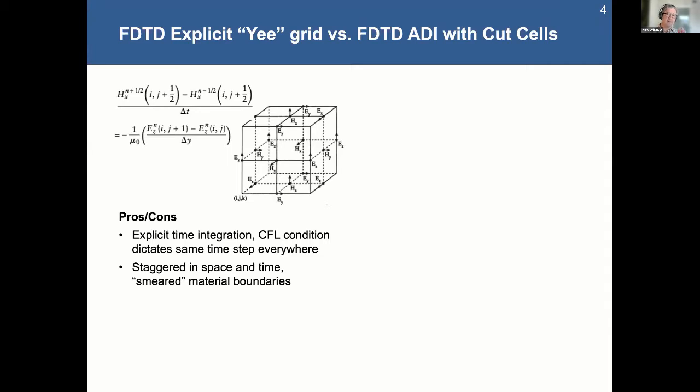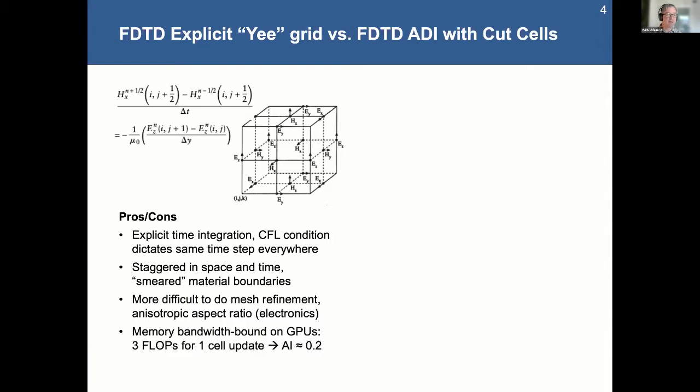But it is staggered in space and time. And if you look at the way it's applied to these complex geometries, the material properties tend to be smeared out over this Yee grid in order to represent the material jumps. And what happens as a result is that you end up with these effects at low resolutions that are not great.